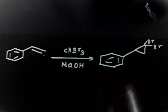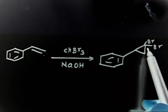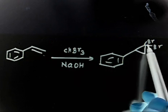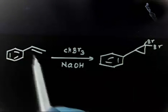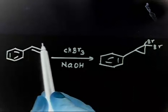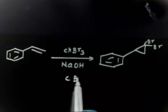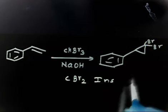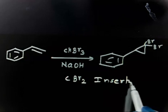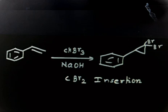So this is an insertion reaction of carbon. If you see, basically CBr2 has been inserted — there you have a double bond and now we have added CBr2 here. So it looks like CBr2 insertion. CBr2 behaves as a carbene, so it looks like CBr2 insertion.